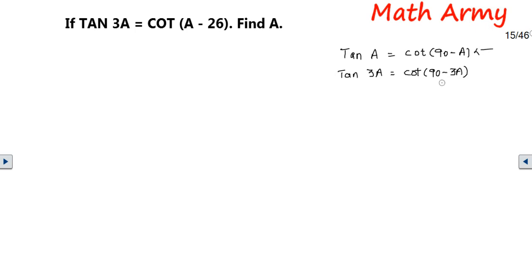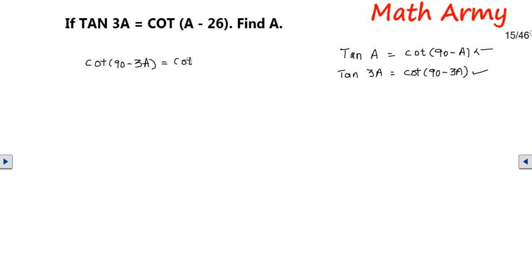Now, instead of tan(3a), I am going to write cot(90° - 3a). You need to be really good at the fundamentals of trigonometry to handle these kinds of questions. So now: cot(90° - 3a) is equal to cot(a - 26).